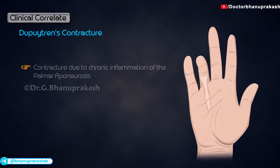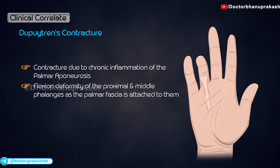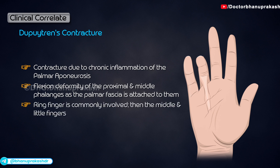Clinical correlate: Dupuytren's contracture is a contracture that occurs due to chronic inflammation of the palmar aponeurosis. As a result of inflammation and thickening, there is a flexion deformity of the proximal and middle phalanges, as the palmar fascia is attached to them. The terminal phalanges remain unaffected, and the ring finger is more commonly involved than the middle and little fingers. It is more common in middle-aged males.